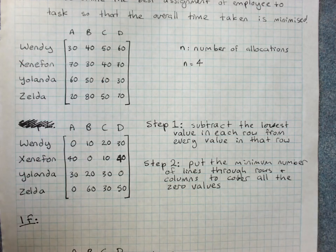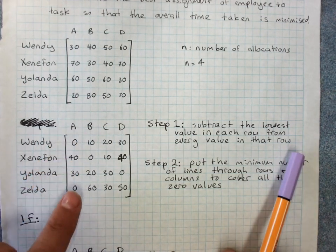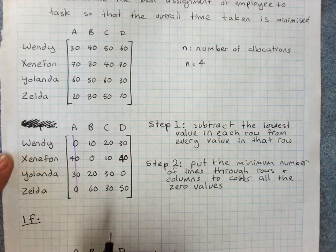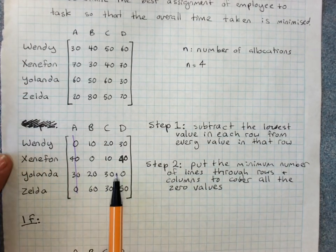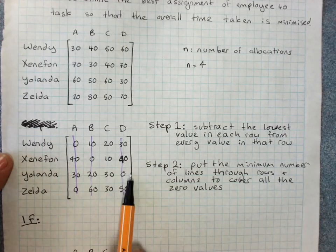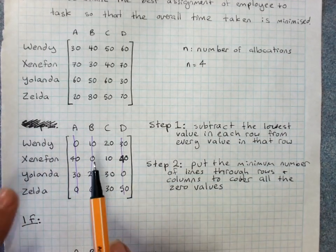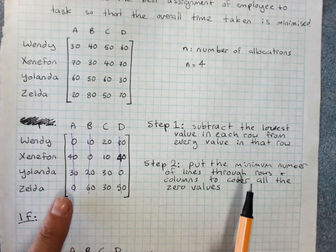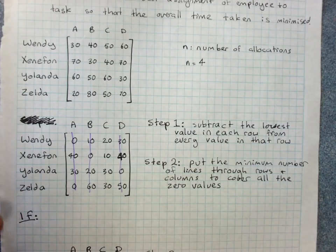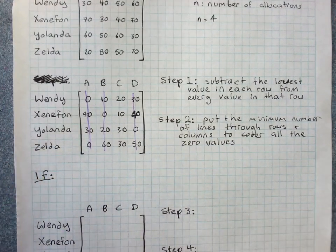The way you do it is you start by going through any row or column that's got the most zeros. So column A here has two zeros. Put a line through that. Then there's only two other zeros. So you might as well just go straight down through here. You could have gone across for these two. That would be fine as well. But I've got a minimum of three lines to cover all the zeros. Now the check that you're going to keep doing is this.